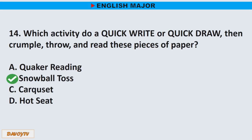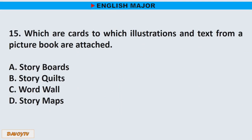Question number 15. Which are cards to which illustrations and text from a picture book are attached? A. Story boards. B. Story quilts. C. Word wall. D. Story maps. The correct answer is letter A. Story boards.